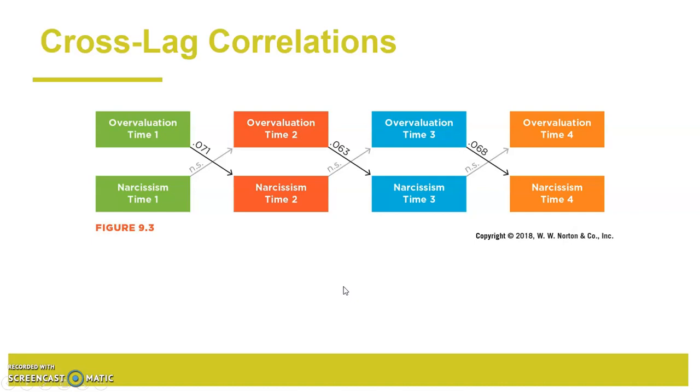But this is where you can get at more of the temporal precedence. So here's overvaluation time two and its correlation with narcissism at time one, and then its correlation with narcissism at time two. So one variable correlated with the other, at time one correlated with time two.